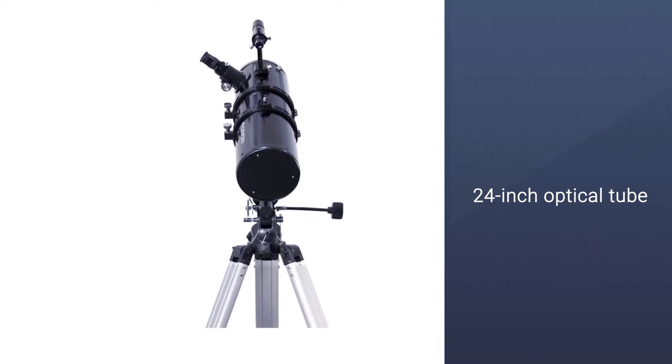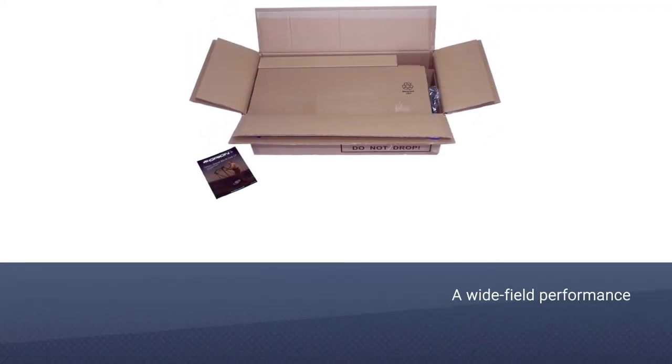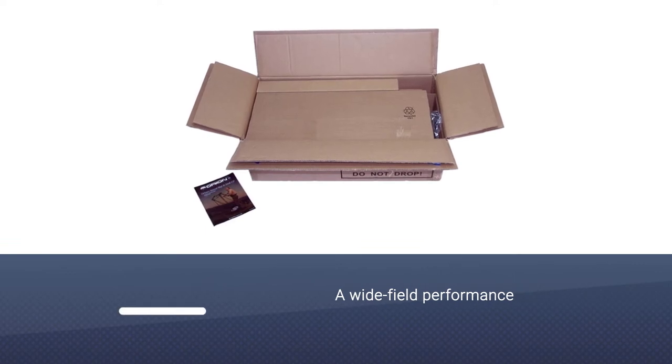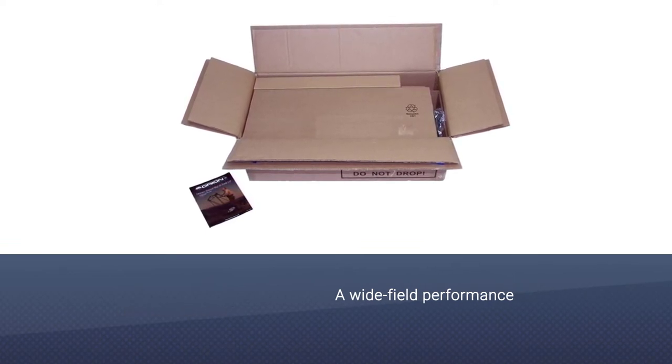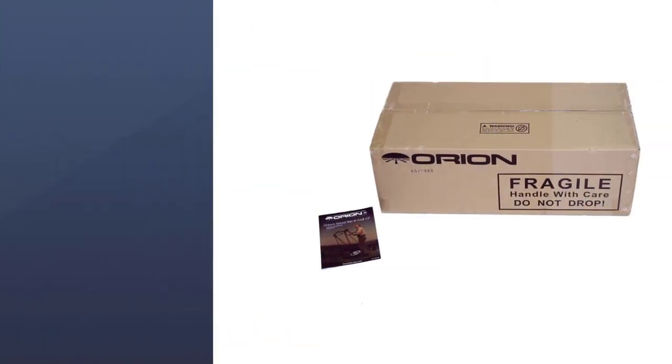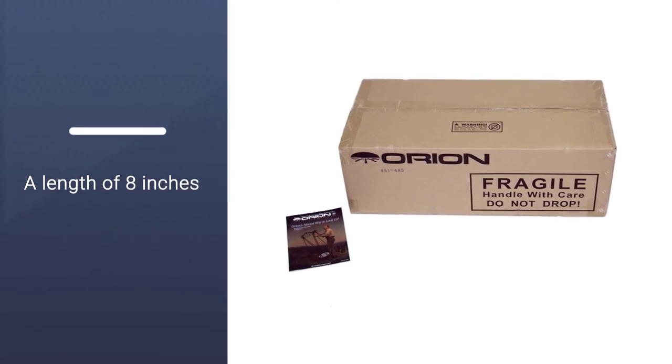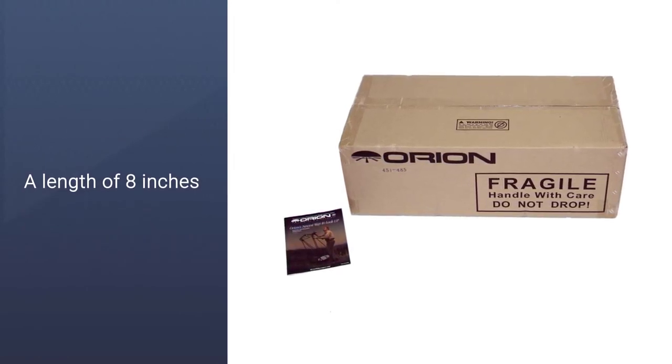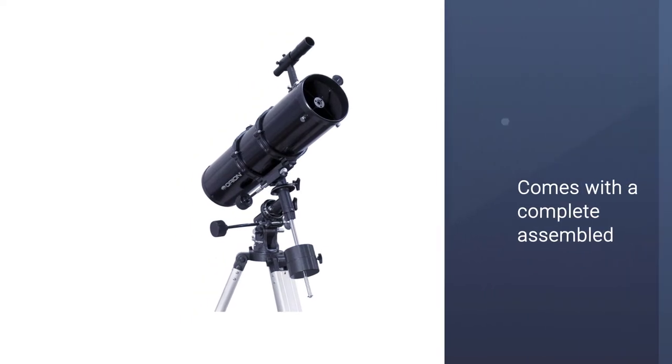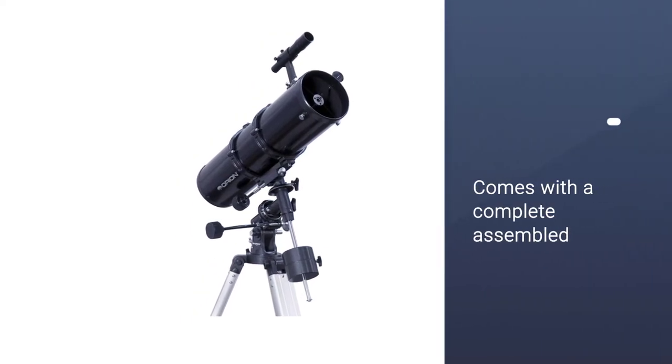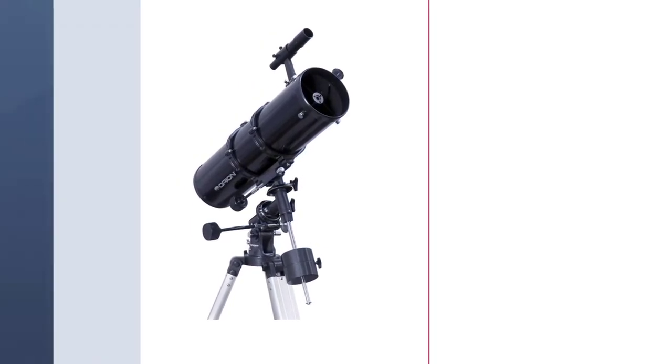It has a 24-inch optical tube that facilitates fast focal ratio and easy portability for wide field performance. It comes with an 8-inch counterweight bar for easy tracking. This completely assembled telescope weighs about 27 pounds, making it convenient for traveling and best for planetary and lunar imaging.